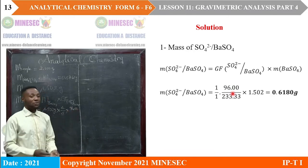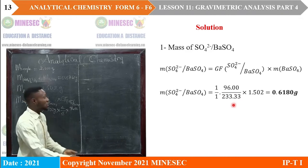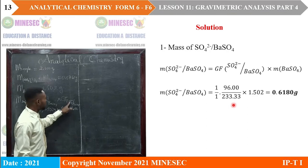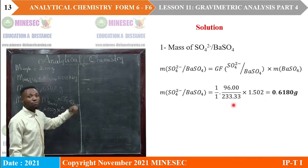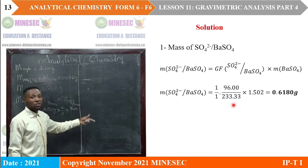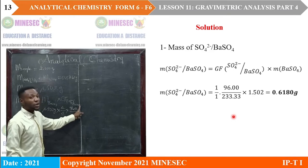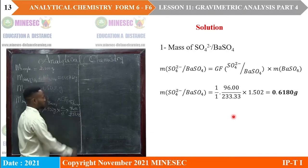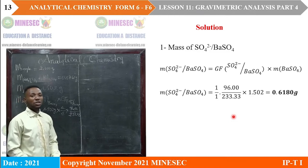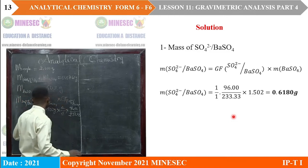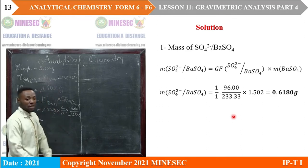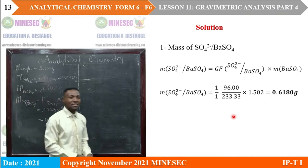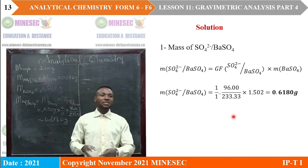So the molar mass of sulfate is 96.00. To determine the molar mass, you take the atomic mass of sulfur plus 4 times the atomic mass of oxygen, which gives 96.00. For barium sulfate, the molar mass is 233.33. When you perform this operation, you are going to have the mass of sulfate ion in the precipitate equal to 0.6180 grams. That is the mass of the sulfate ion present in the precipitate.